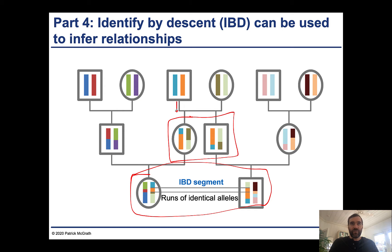So this individual, for example, provides a gamete, and this gamete happens to be a chimeric cross with the first quarter of the chromosome from the blue and the next three quarters from the orange. And similarly, this is approximately half-half.